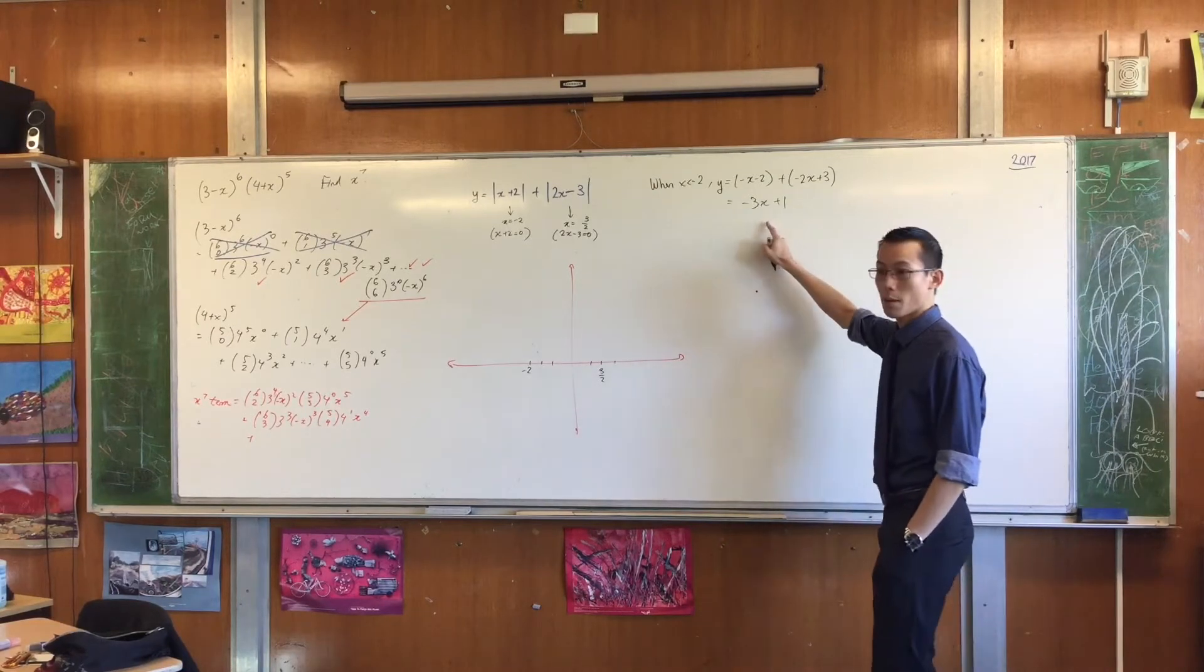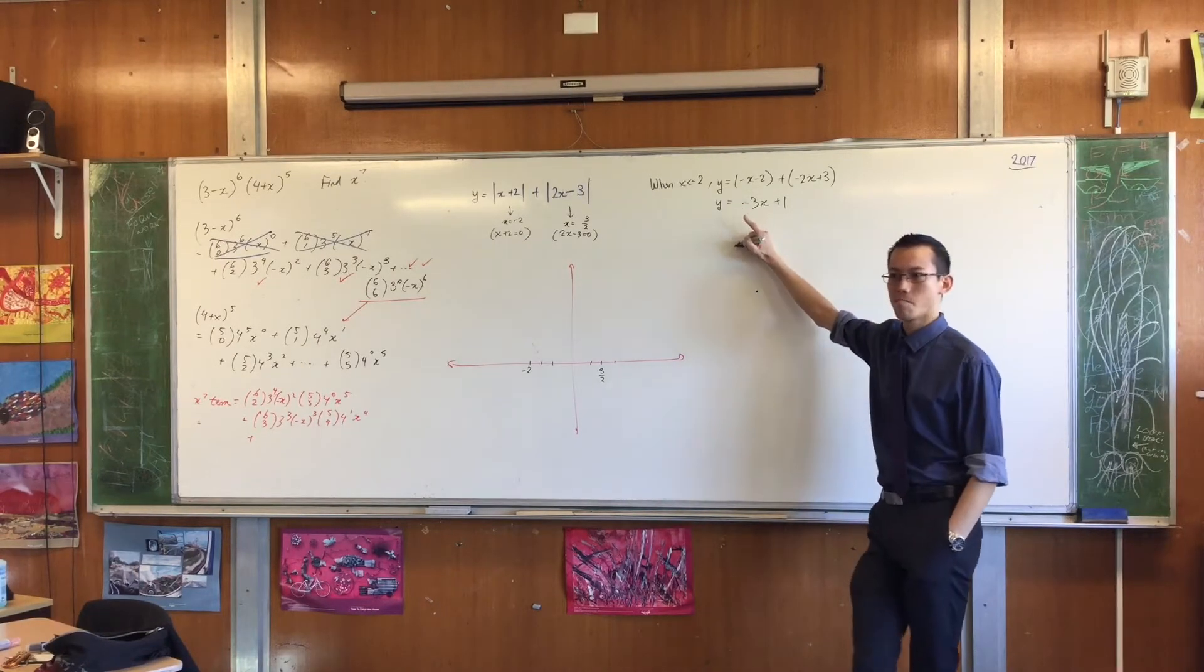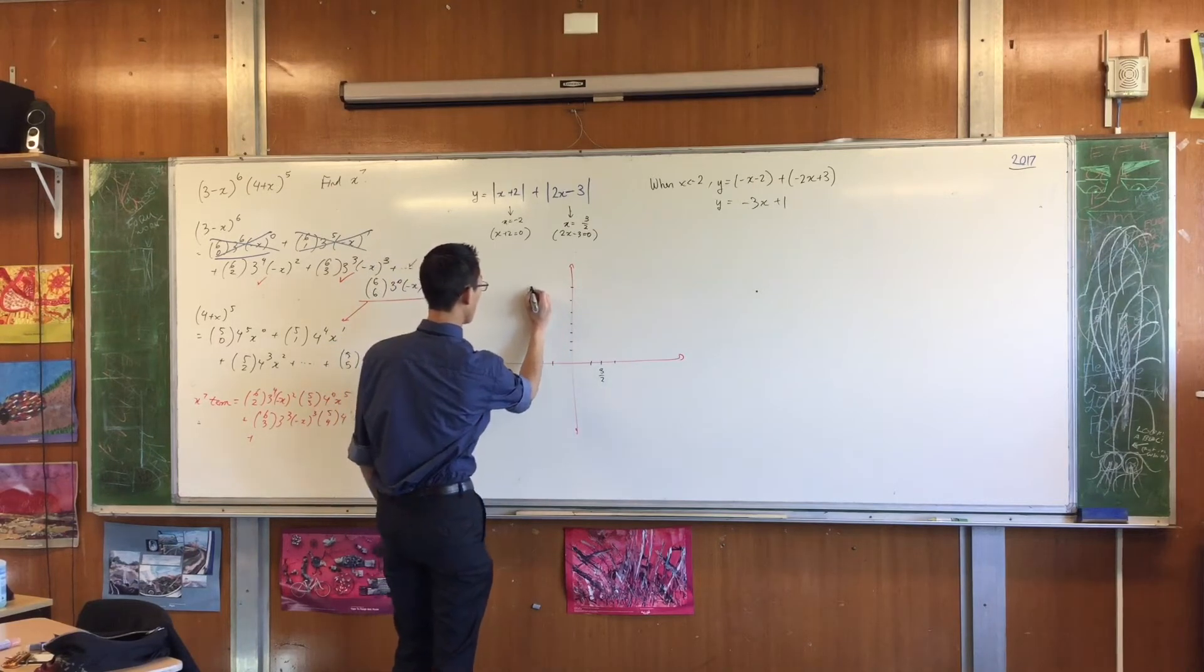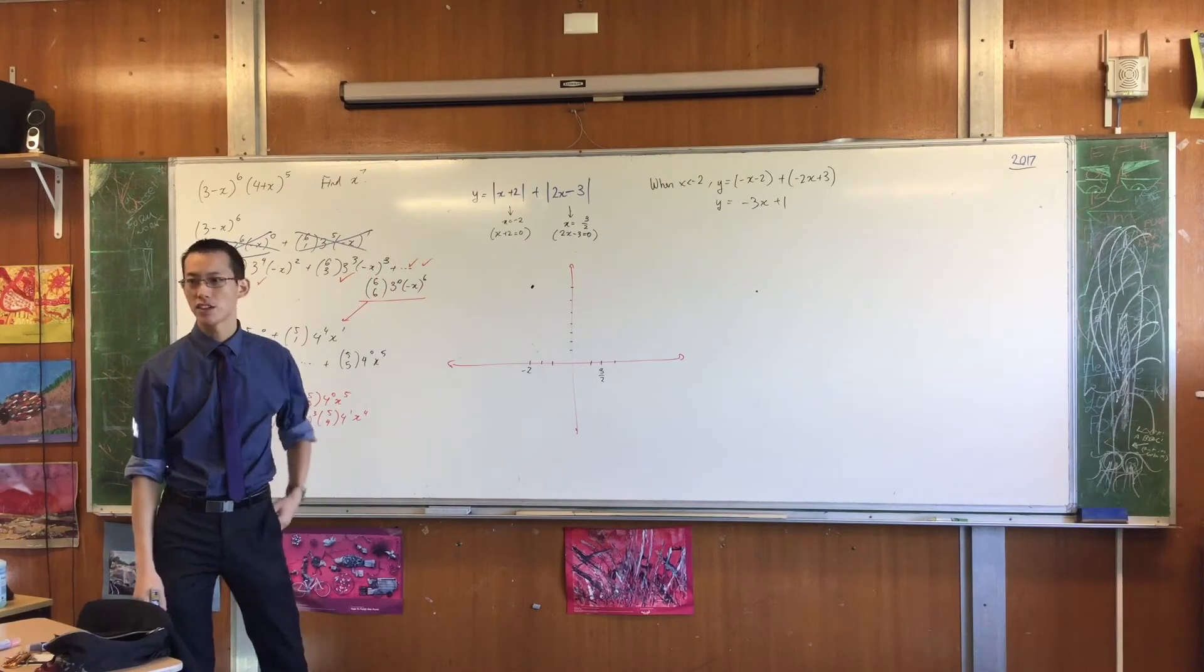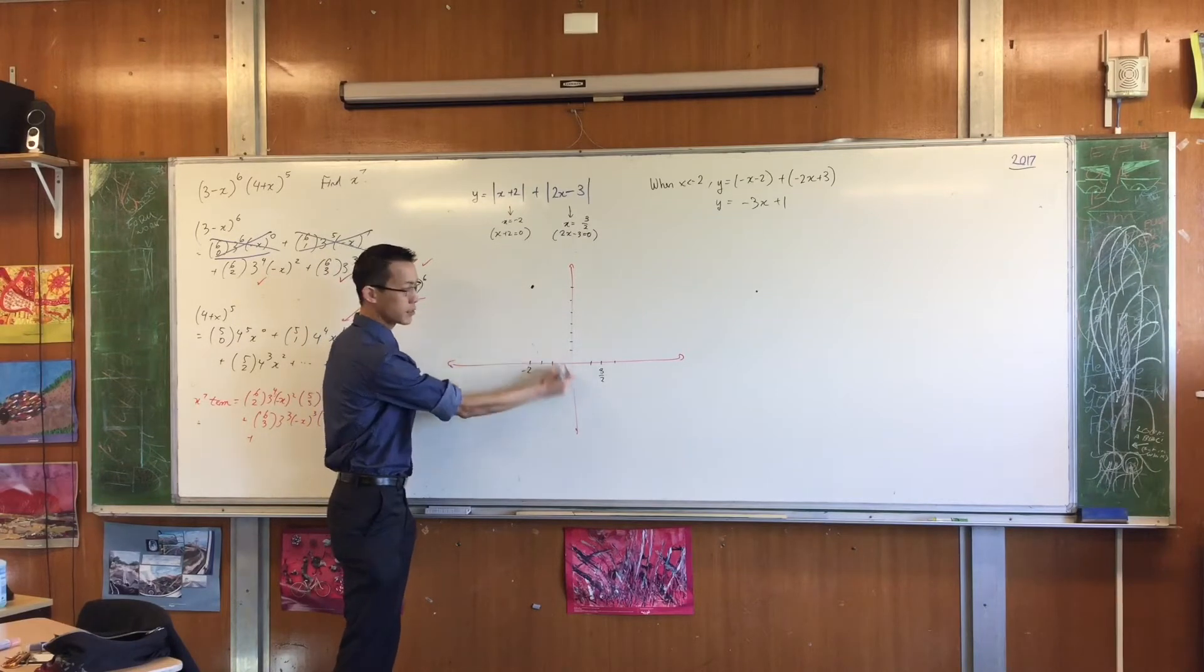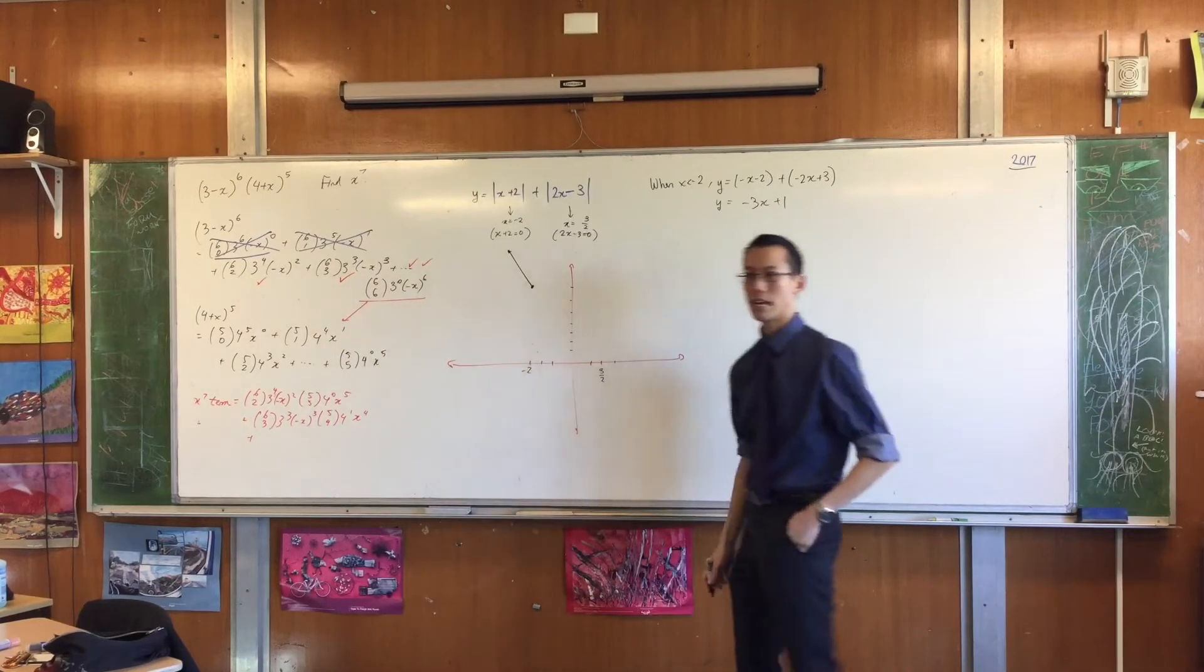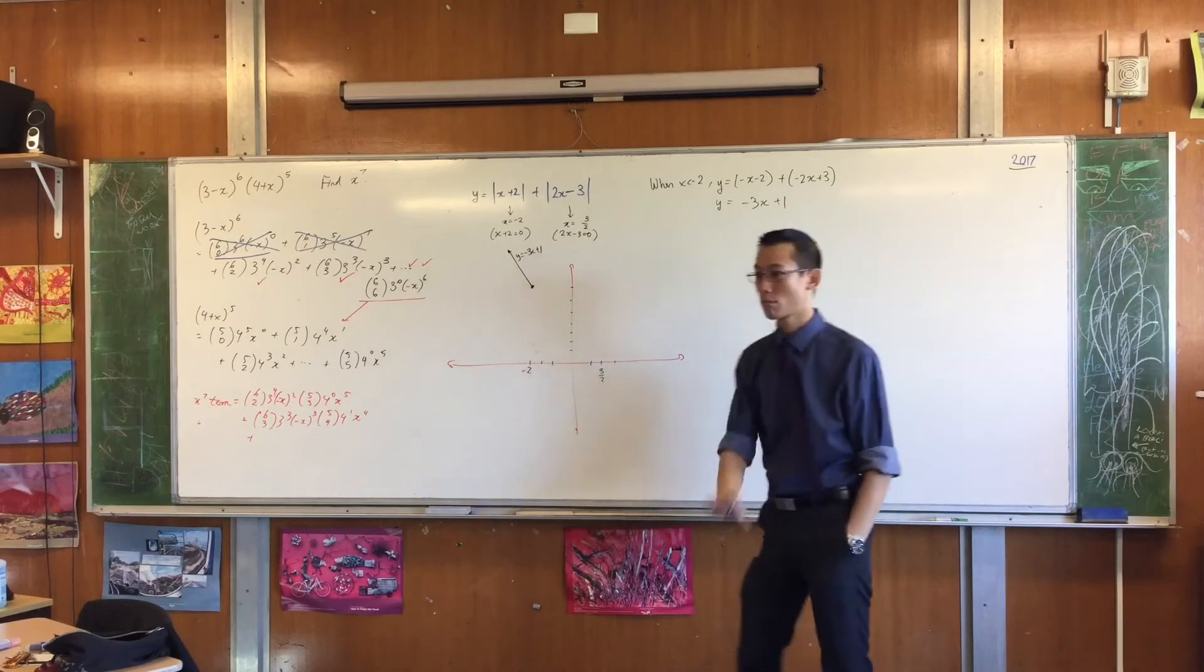So to the left of negative two, this is what I'm going to draw. When x is negative two, the value that this takes on is going to be minus three times minus two is six plus one, which is seven. Let's go one, two, three, four, five, six, seven. That's a coordinate that I pass through. It's minus three x plus one. So where does the rest of the line go? It does go down, but I'm actually only drawing to the left of this, right? I want to go in the opposite direction. So it looks to me like something like that. This is y equals minus three x plus one, and it only exists to the left of negative two. So far so good?